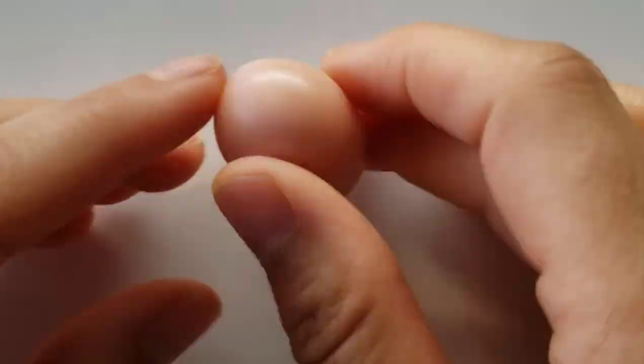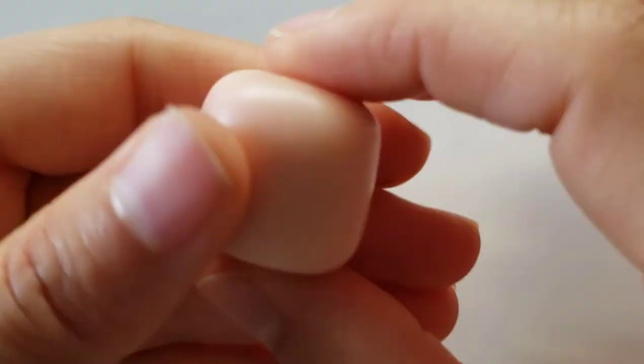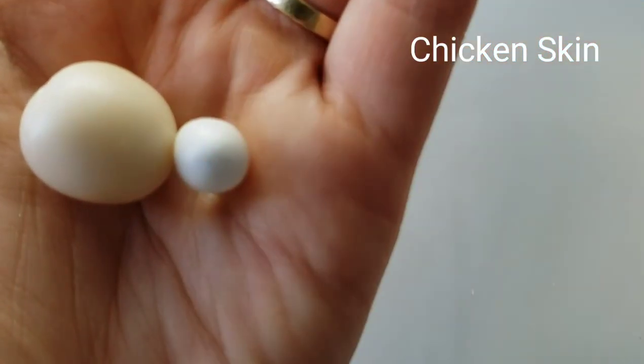Gently roll it out into the shape of a marshmallow. Yeah, that's about right. And now to use these three colors for the chicken skin.